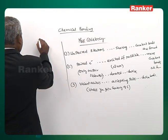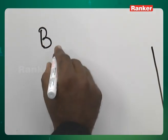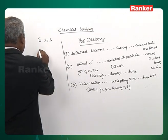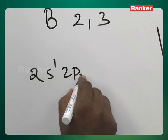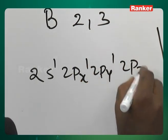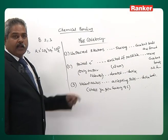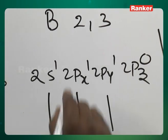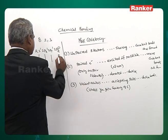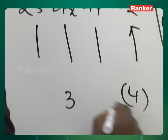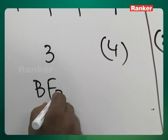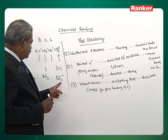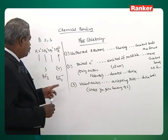Boron: atomic number 5, configuration 2s1, 2px1, 2py1, 2pz0. It has three unpaired electrons used in sharing, and one vacant orbital to accept a pair of electrons. Maximum covalency of boron is 4 — examples being BF3 (three bonds) and BF4⁻ (three bonds by sharing plus one accepted from F⁻).